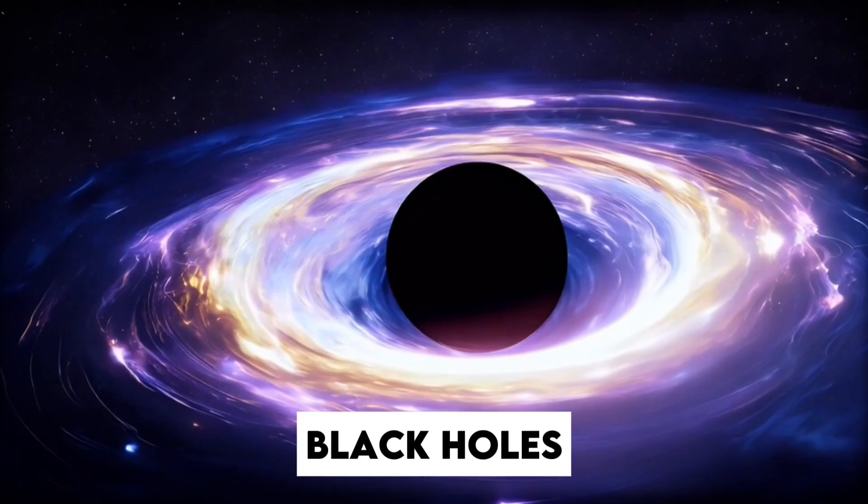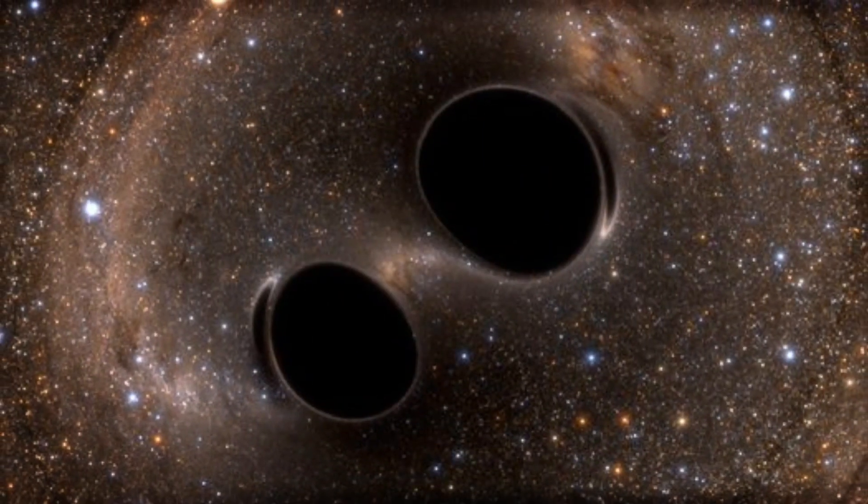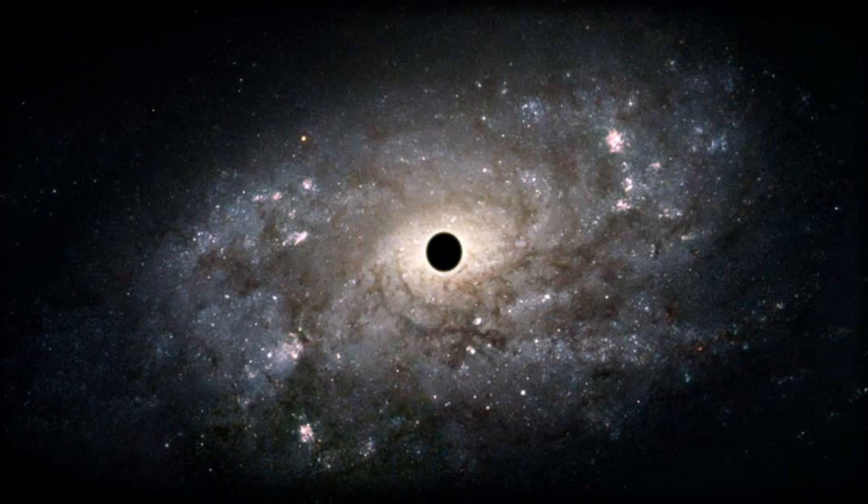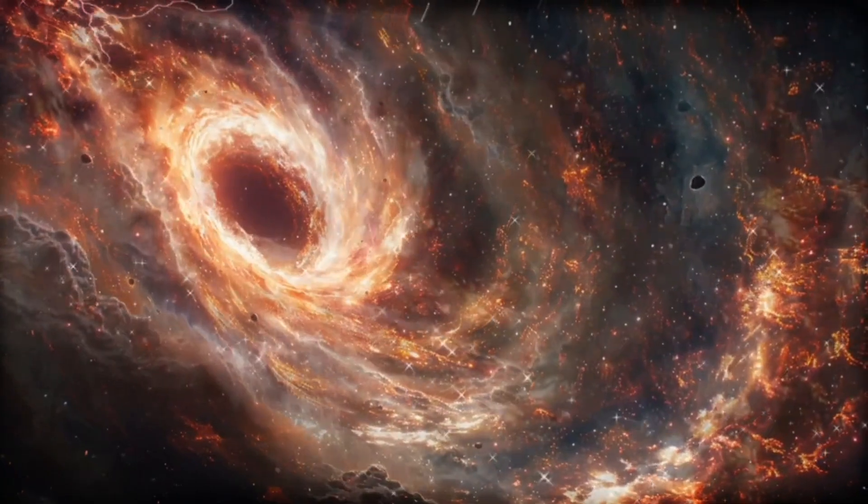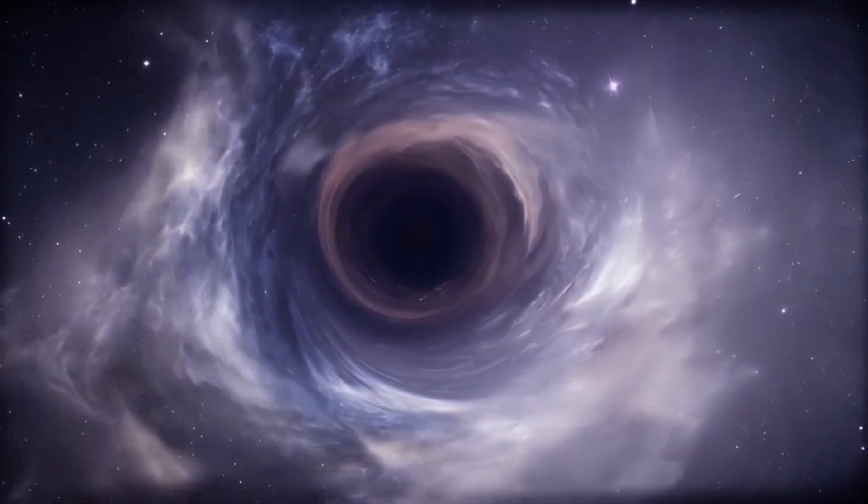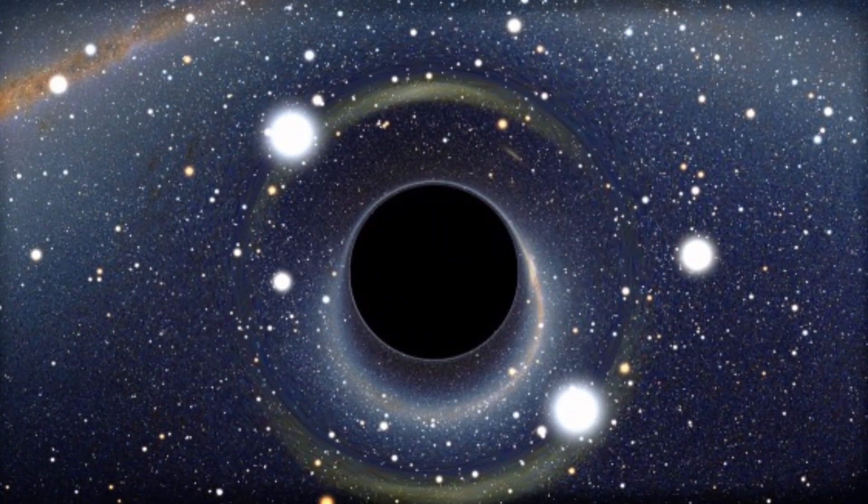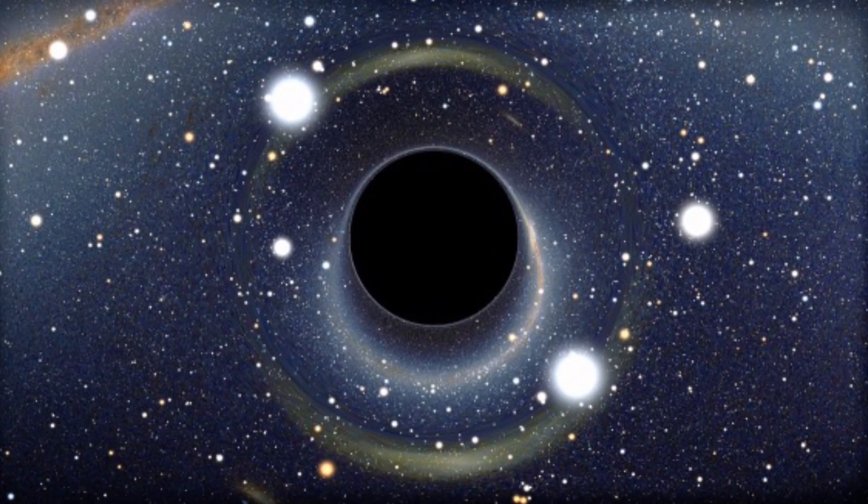Number three, black holes that showed up way too soon. When Webb zoomed in on some of the earliest galaxies, tiny red specks from the dawn of time, it found something totally unexpected. Powerful whirlpools of gas swirling in their centers. What could cause that kind of chaos?